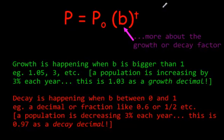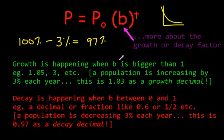Okay, now decay, which is a graph that will go downwards like so, is happening when b is between 0 and 1. In this case here, it said a population is decreasing by 3% each year. This is 0.97 as a decay decimal. Well, how did they come up with that? Well, the population was 100%. It's decreasing every year by 3%. So you get 97%. You write that as a decimal, 0.97.